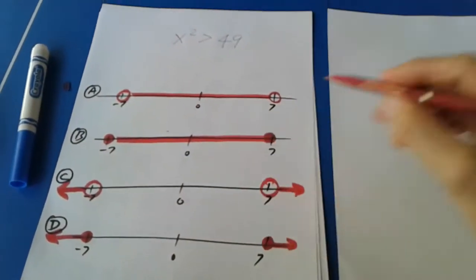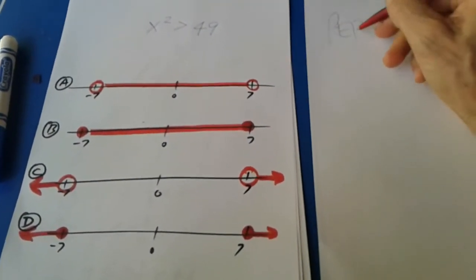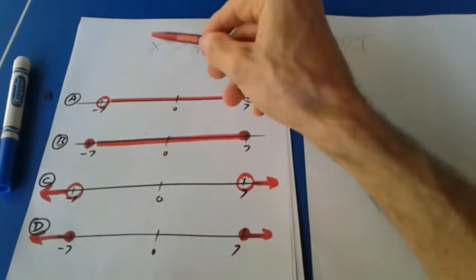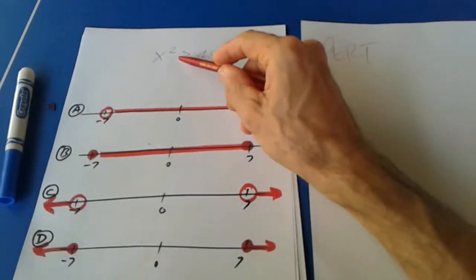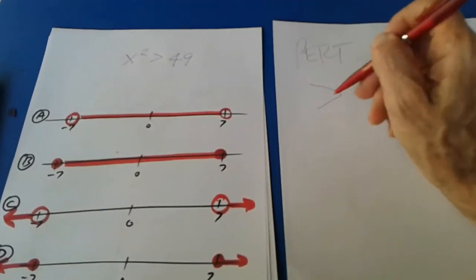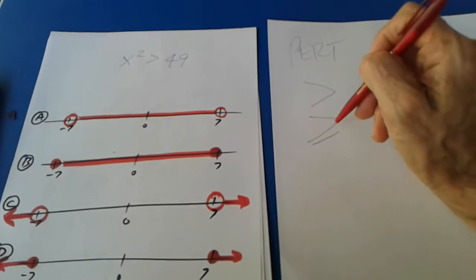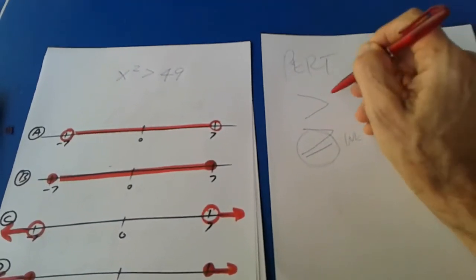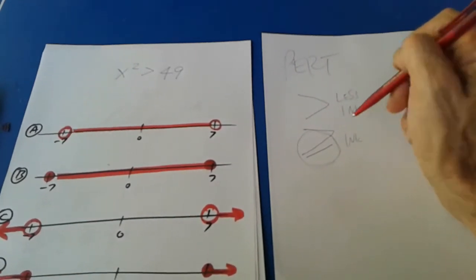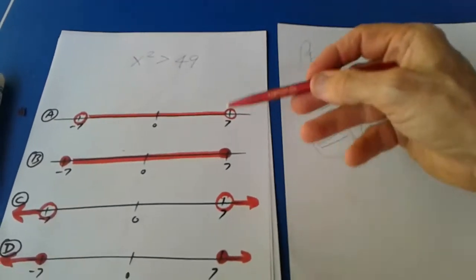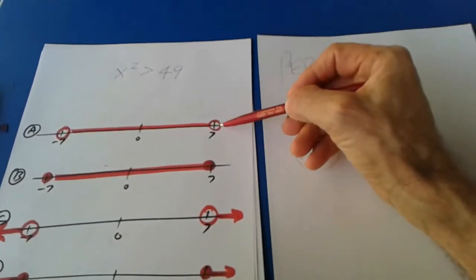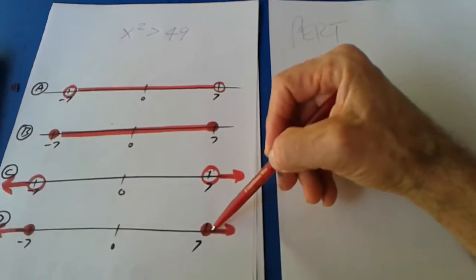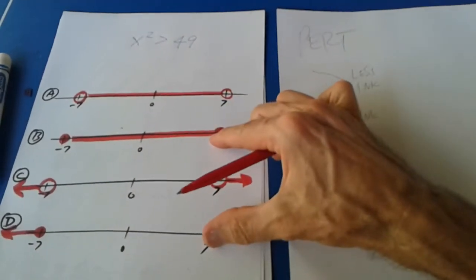Here's a very typical PERT question — they give you four different ways of laying out the lines. We have a greater-than sign. Remember, it could be greater than or greater-than-or-equal, which has more ink. This one has less ink. Which of these has less ink? That one definitely has less ink compared to this one. So we can immediately eliminate those two.